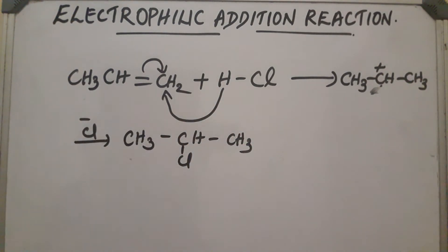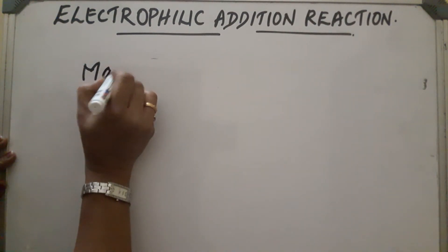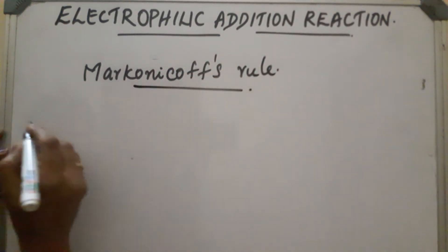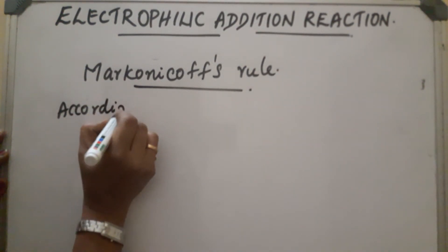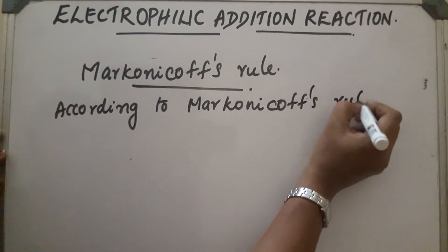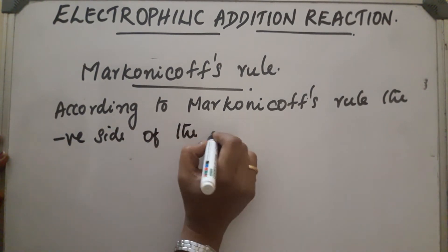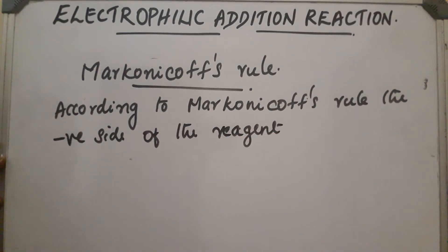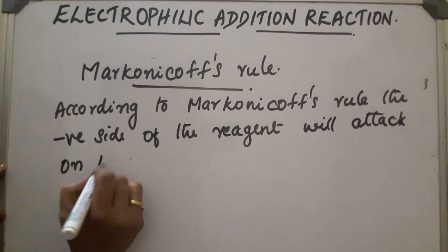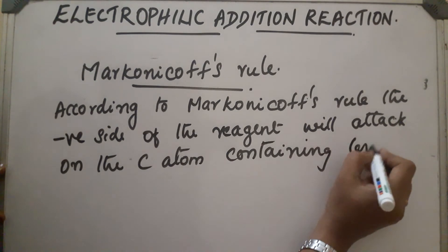But there is a particular rule called Markovnikov's rule. According to Markovnikov's rule, the negative side of the reagent will attack on the carbon atom containing the lesser number of hydrogen atoms.